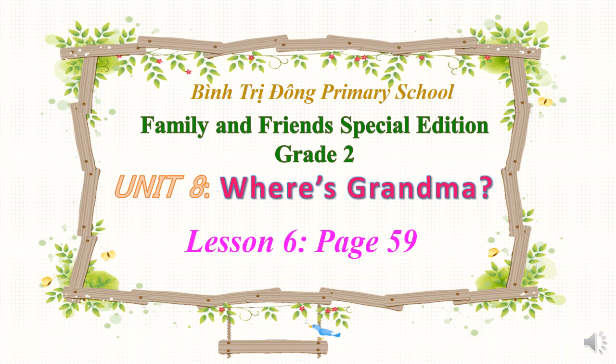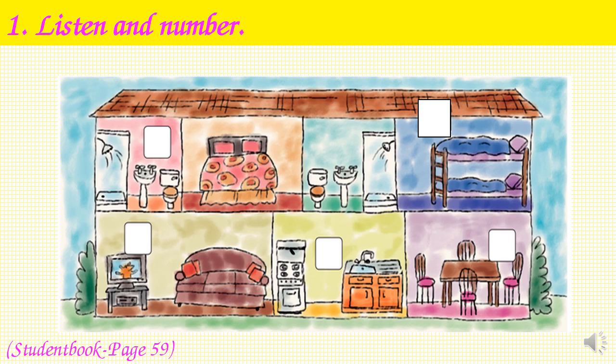Hello everyone, welcome back. Today we're going to learn Unit 8, West Rainmark, Lesson 6, page 59. Now open your student book on page 59 and begin with Part 1: Listen and Number. First, look at the pictures of the house, point and say the rooms.